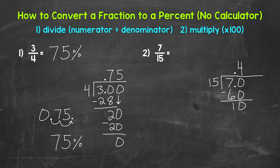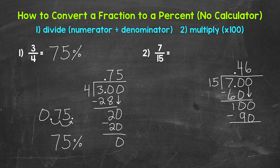So we don't have that clean cut zero — we can continue on. Let's use another zero that we can bring down. So now we have 100. 100 divided by 15: how many whole groups of 15 in 100? Well, 6 — that gets us to 90. So let's put our 6. Then multiply: 6 times 15 is 90. Subtract: 100 minus 90 is 10. So we still don't have that clean cut zero.